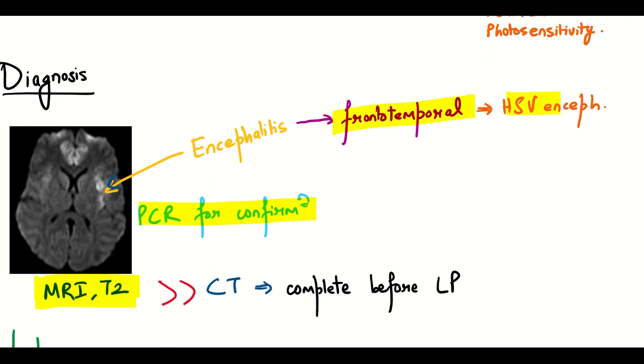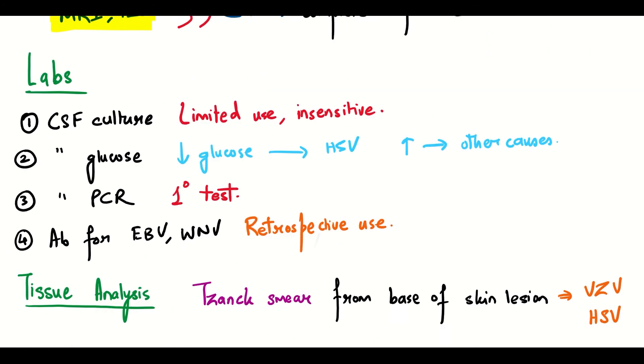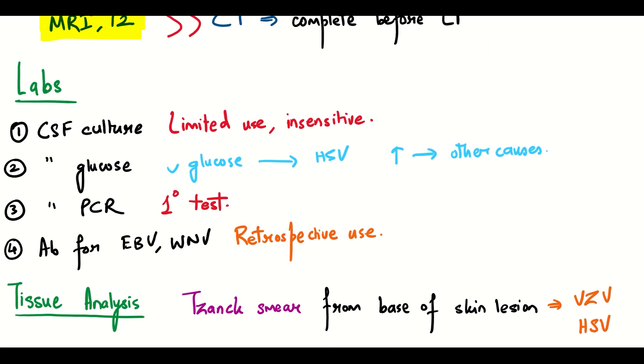Frontotemporal will show HSV encephalitis. CSF glucose will be normal in case of HSV and PCR is the primary test.